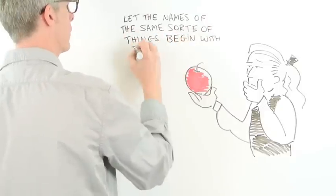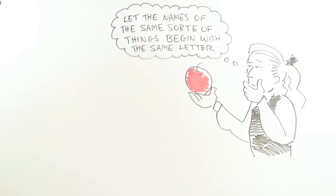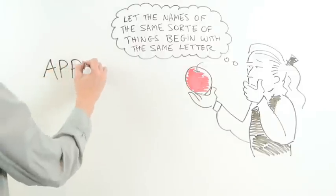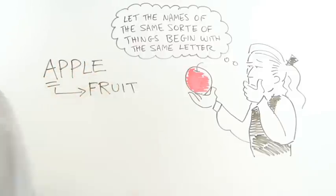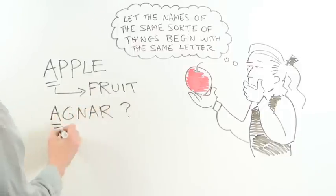Newton's idea was to let the names of the same sort of things begin with the same letter. If all fruits started with A, words wouldn't just be arbitrary labels, haphazardly assigned. You could know just from hearing a word what category of thing it belonged to.